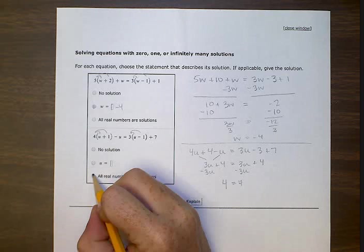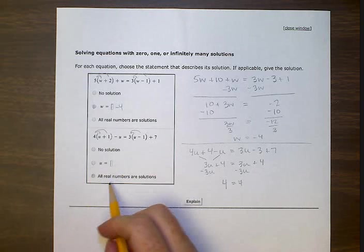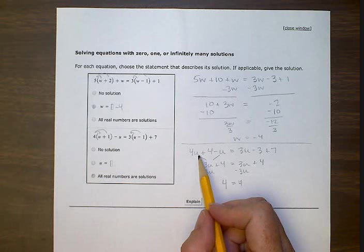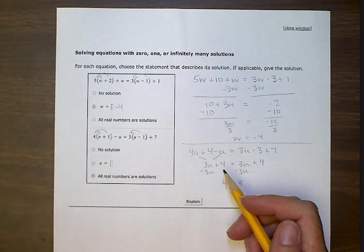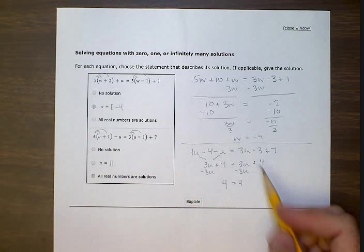All real numbers are solutions means that if u is one, it's true. If u is two, it's true. If u is a hundred, it's true. For any value of u, four will still equal four.